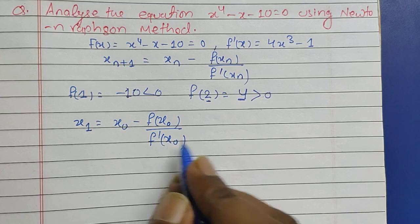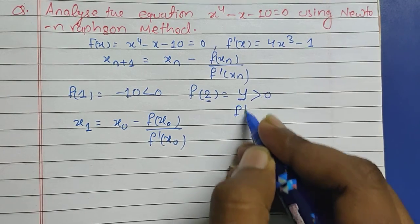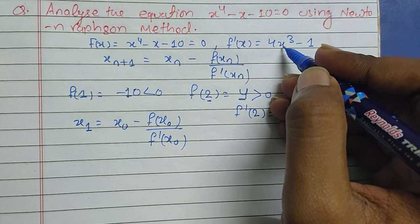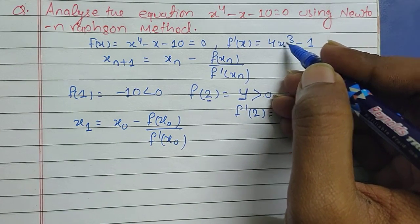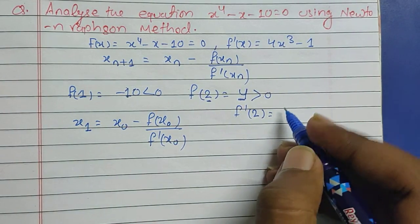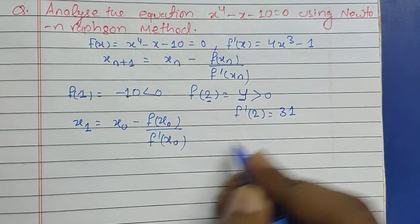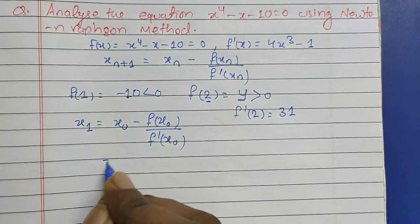So f'(2), we have to put the value of x = 2 in this equation, then we will get 31. Now solve this.